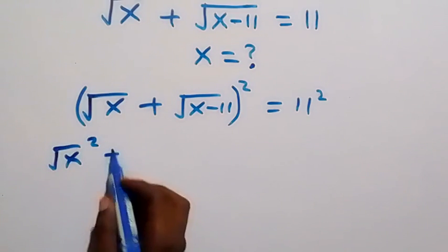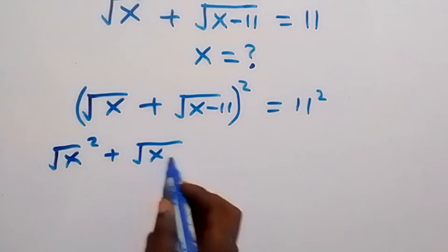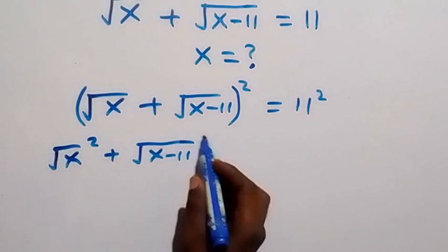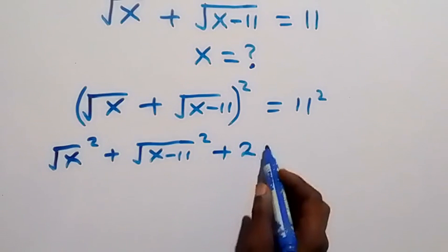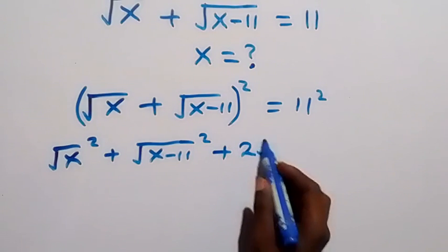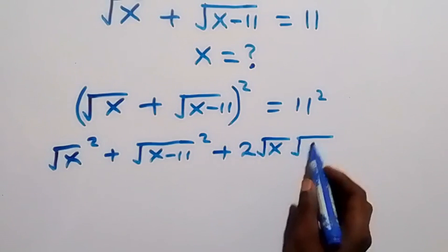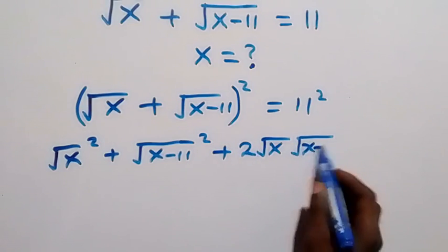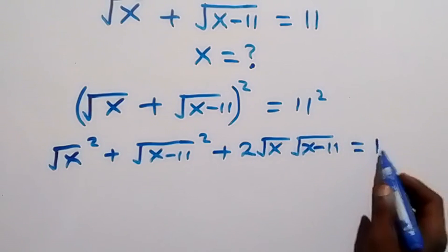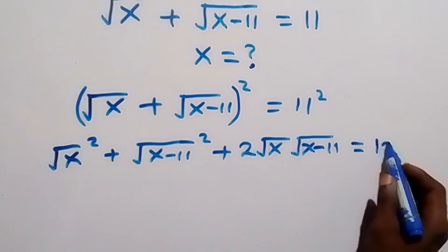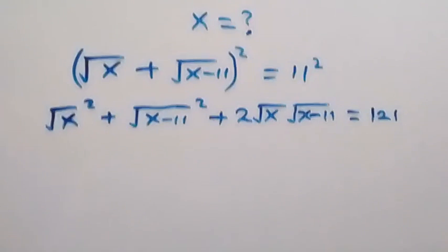...plus √(x − 11) also squared, plus 2 times √x times √(x − 11), which equals 11 squared, that is 121.